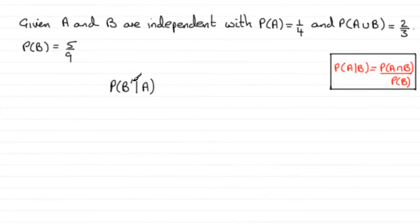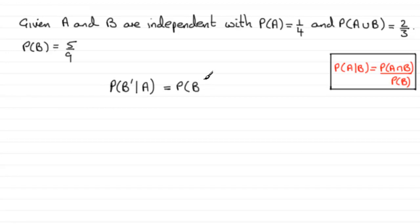For this last part we need to work out the probability of not B given A has occurred. The first way to do this is simply because the events are independent — not B is totally unaffected by A's occurrence — which means this is exactly the same as the probability of not B. The probability of not B is one minus five ninths, in other words four ninths. That's the way I would do it.